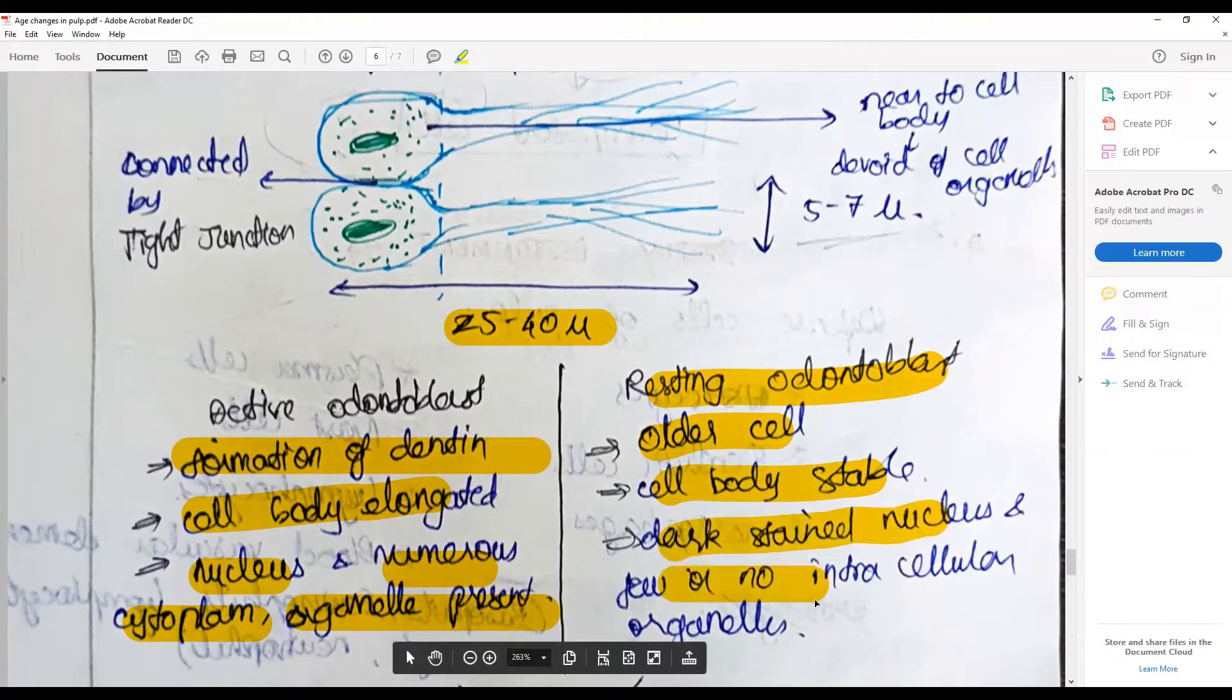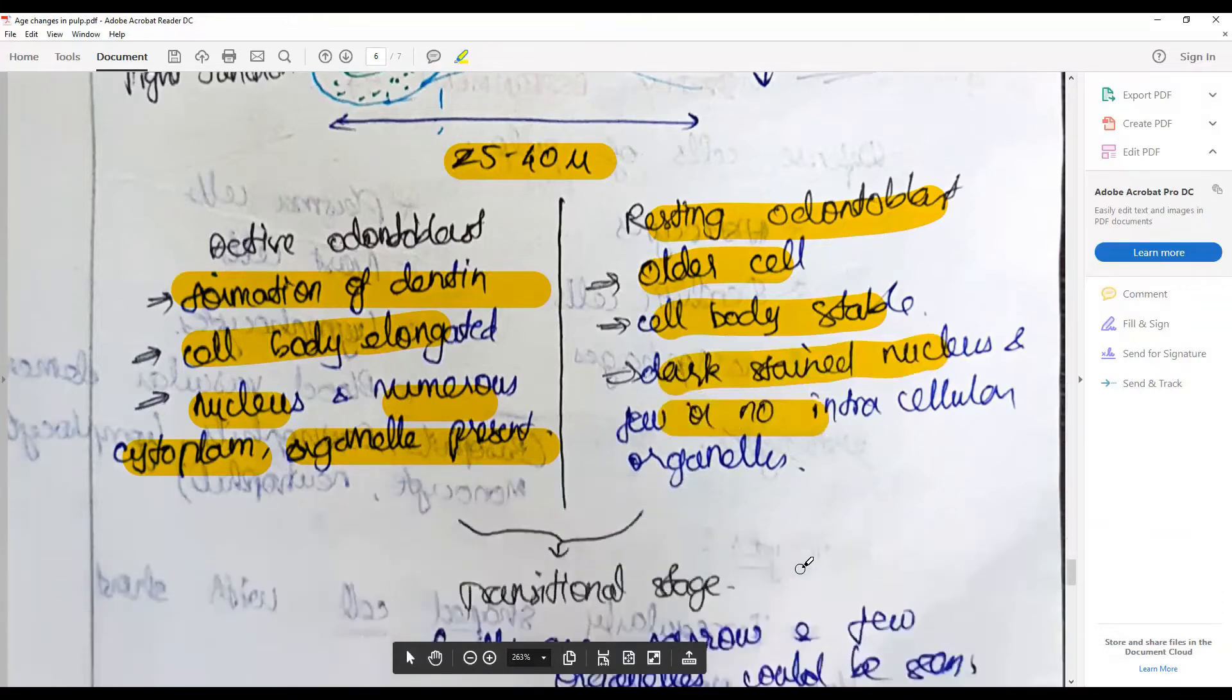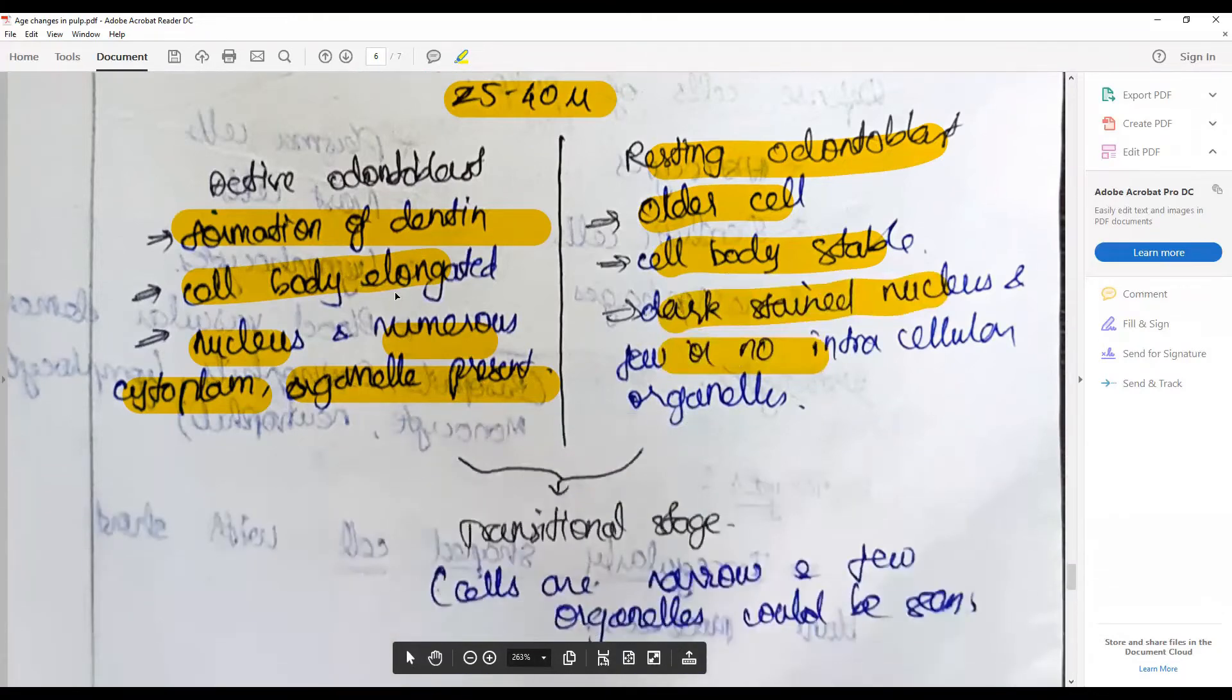They have a dark-stained nucleus with few or less intracellular organelles. In the adolescent stage, somewhere 18 to 40, there is a transitional cell stage.